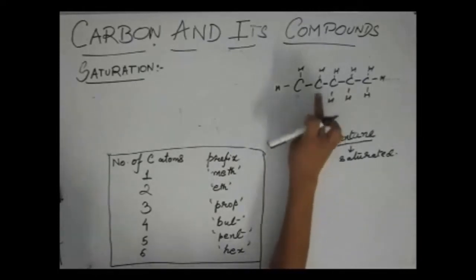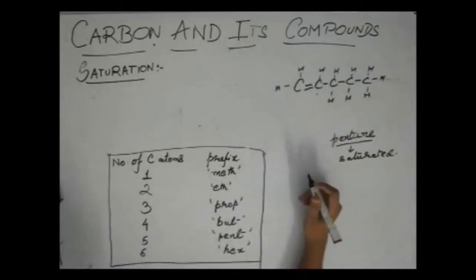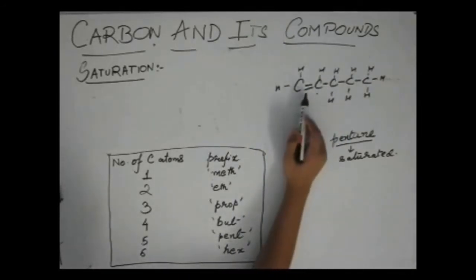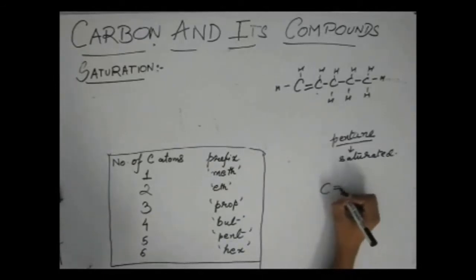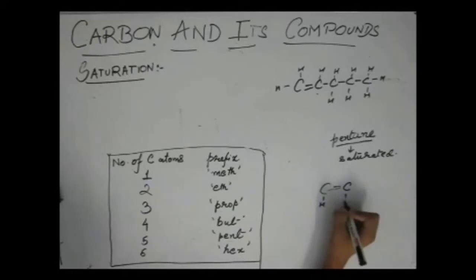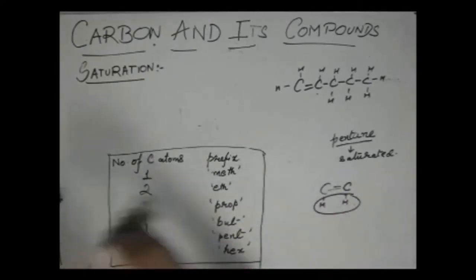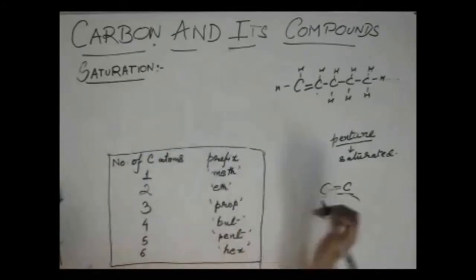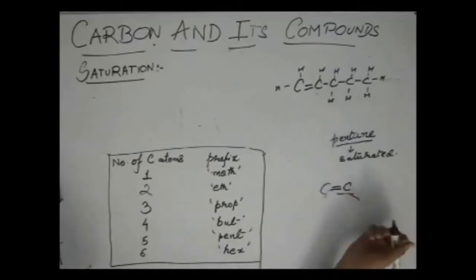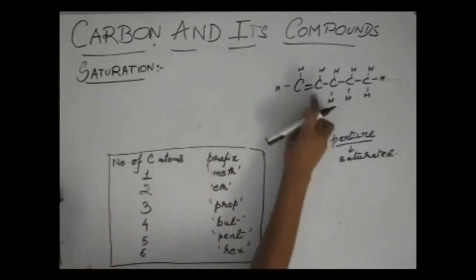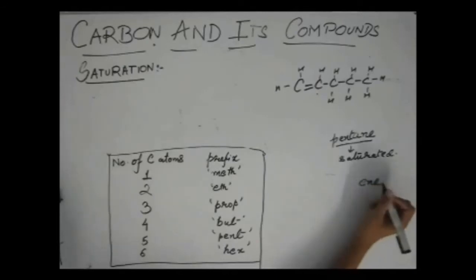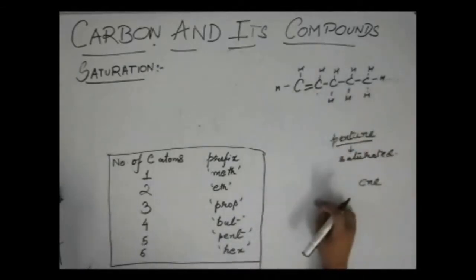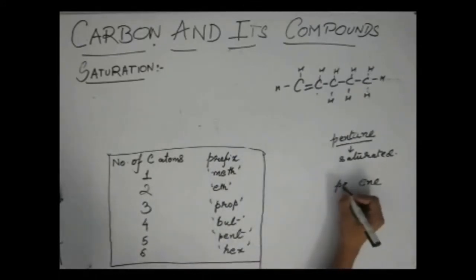Pentane has only single bonds, so this is saturated. And if we remove two hydrogens and add a double bond over here, what does it become? Now we have a double bond, so it has become an alkene. You realize that just as you can break a double bond and add two hydrogens, you can also remove two hydrogens and make a double bond — just the opposite. So now this compound has a double bond, it is an alkene, the suffix will be 'ene,' and it has five carbons — so again, pentene.